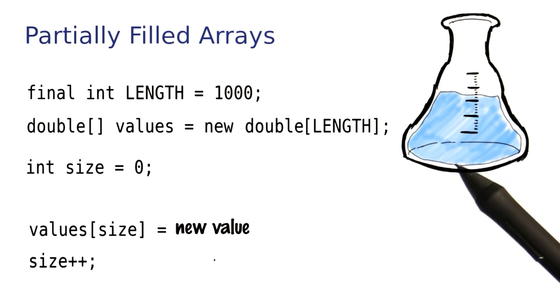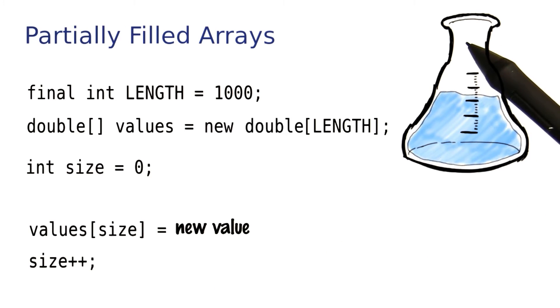Now what happens if I fill up the array with a thousand values and then want to add the thousand and first? Let's have a look at that situation.